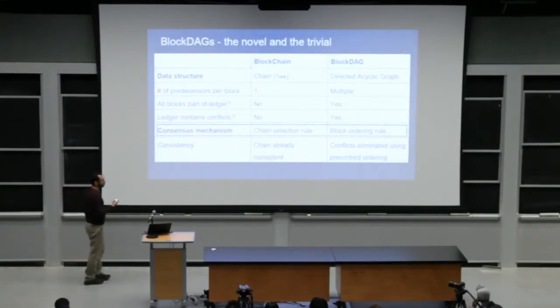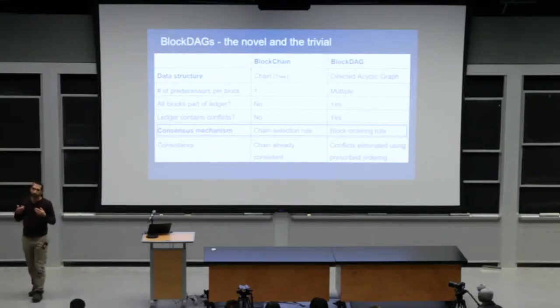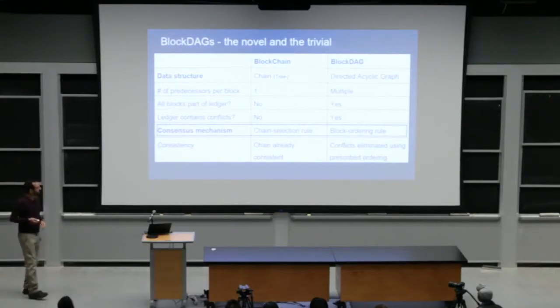In contrast, in a dad, we incorporate all blocks. So the consensus mechanism will look differently. It will look as a rule to order blocks to say what the order over blocks is. I'll give an example shortly.